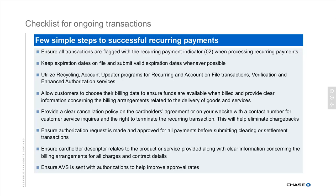Now that you've got the customer on board and will be working with them, what are the things you want to do to ensure future transactions are successful? First and foremost, make sure the software you're using to process payments always flags transactions with the appropriate recurring payment indicators. That allows the issuer to identify that a previous agreement has been made, allows them to reference back to the original transaction if necessary, and allows you in the case of a dispute to go back to the original transaction and say 'this is the establishment of this agreement' — this is a recurring transaction versus an independent standalone transaction.